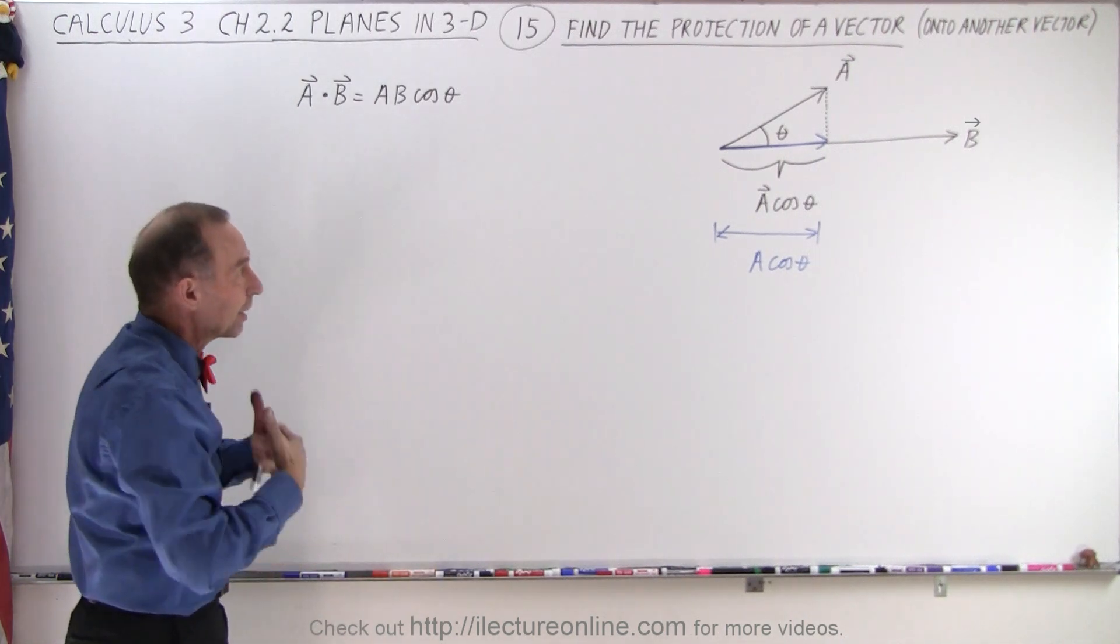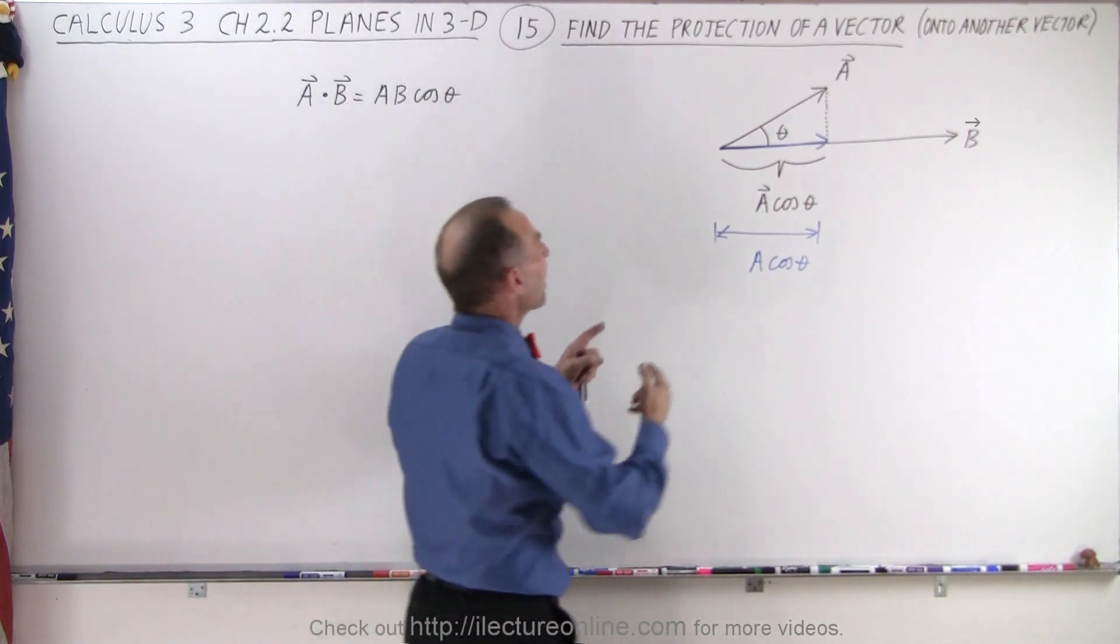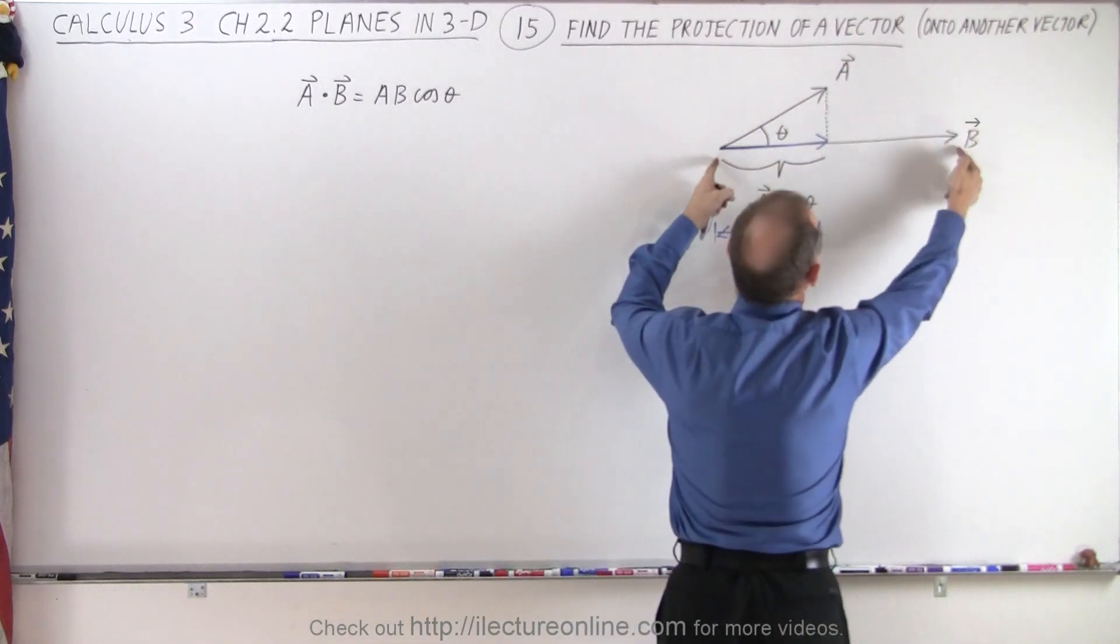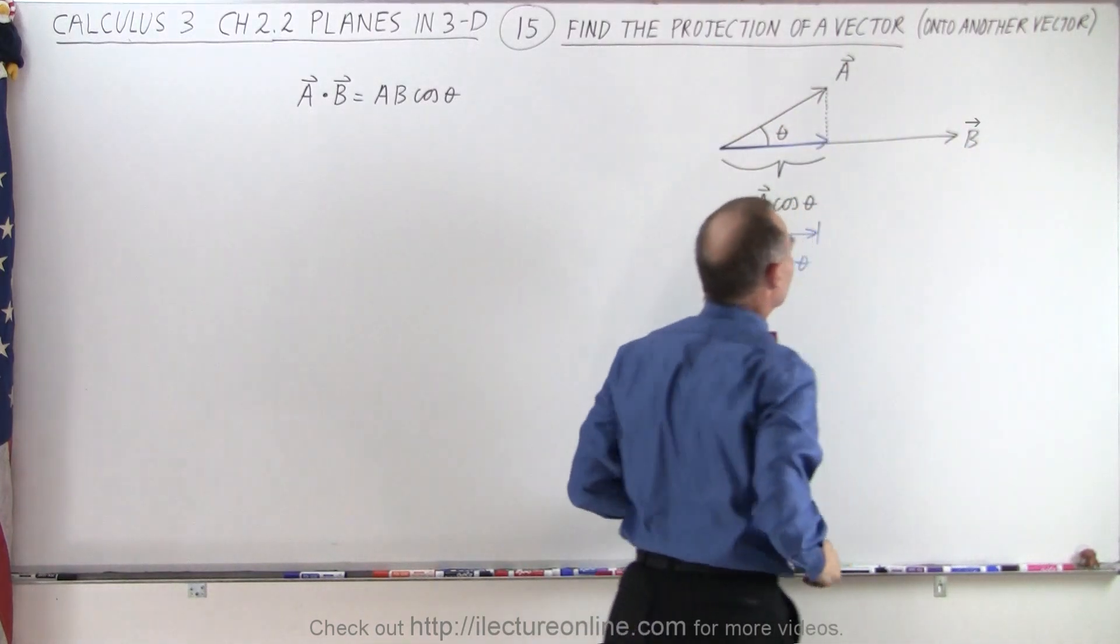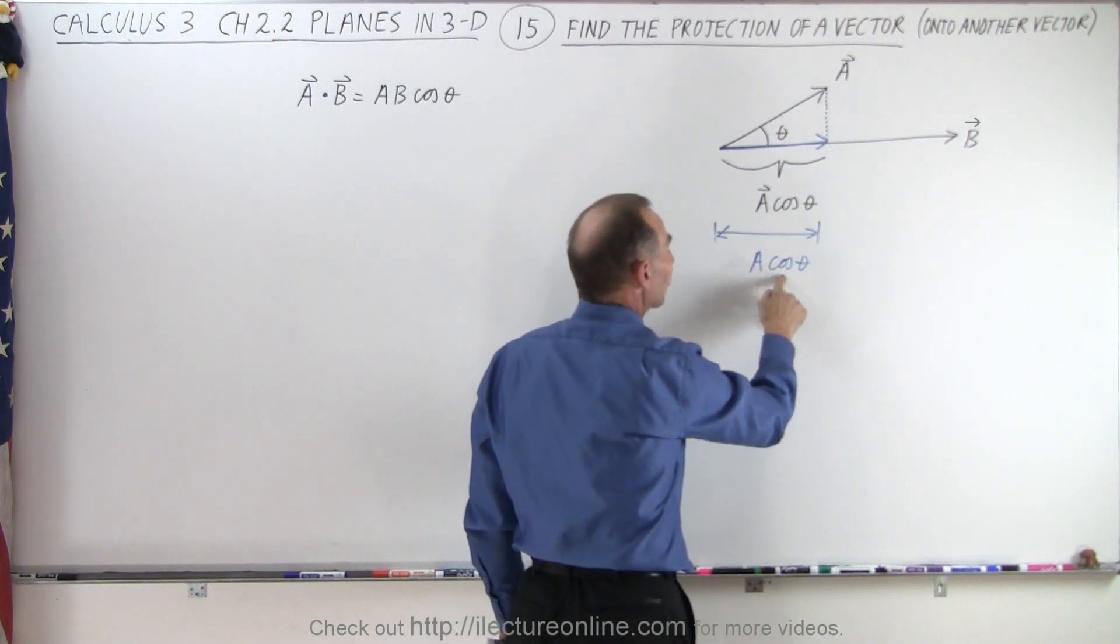So if we take a dot product, we get a scalar value back. But the scalar value will be the magnitude of A times the magnitude of B times the cosine of the angle between them, which is not equal to the magnitude of A times the cosine of theta.